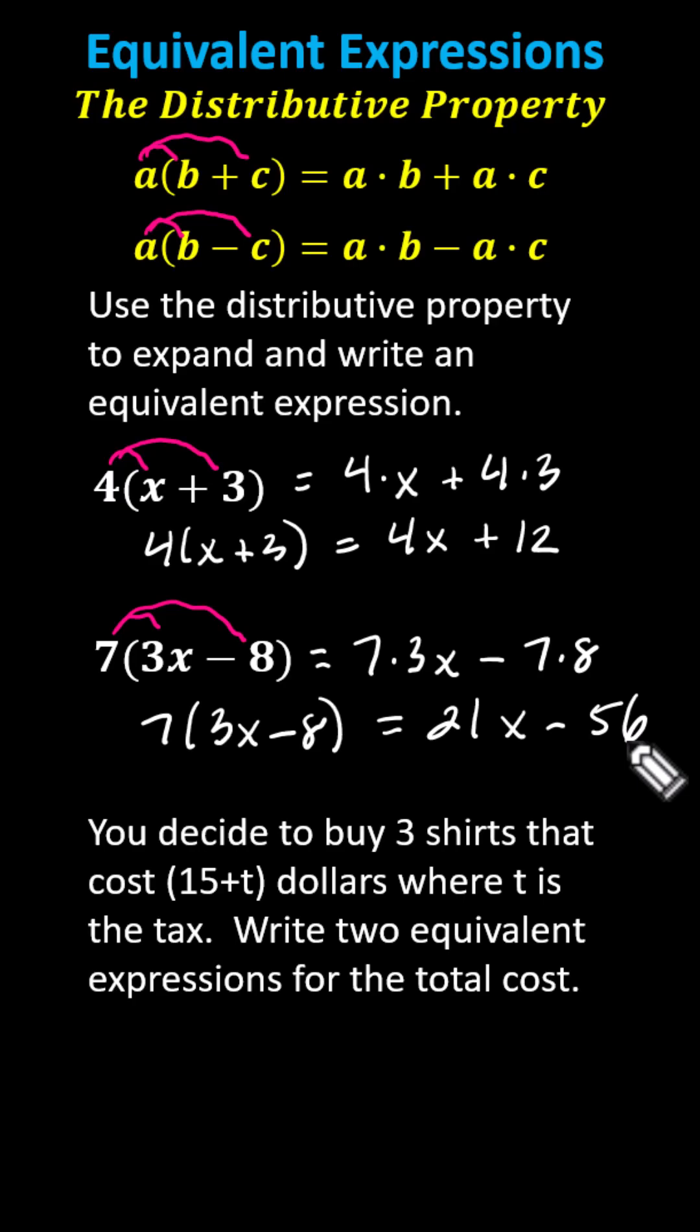And for the last example, you decide to buy three shirts that cost fifteen plus T dollars, where T is the tax. Write two equivalent expressions for the total cost.